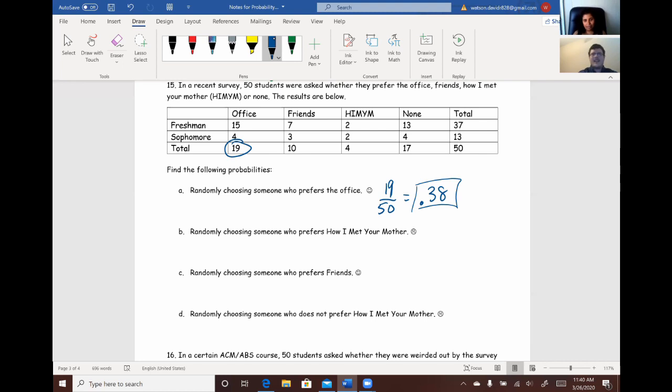All right. Let's look at the probability for How I Met Your Mother. So, for the probability of How I Met Your Mother, we have four total. Again, out of 50. So, it's going to be 4 out of 50. And this time, it does reduce. So, 2 out of 25. So, you have a better chance of finding somebody who likes the Office more than How I Met Your Mother. To be fair, I do like the Office as well. I just prefer How I Met Your Mother.